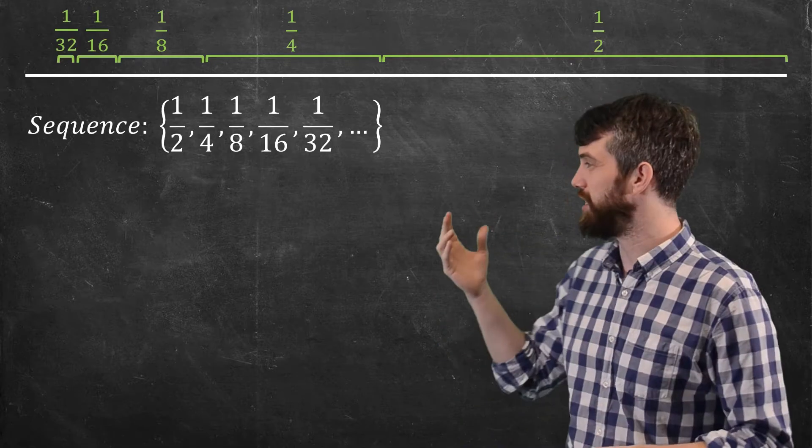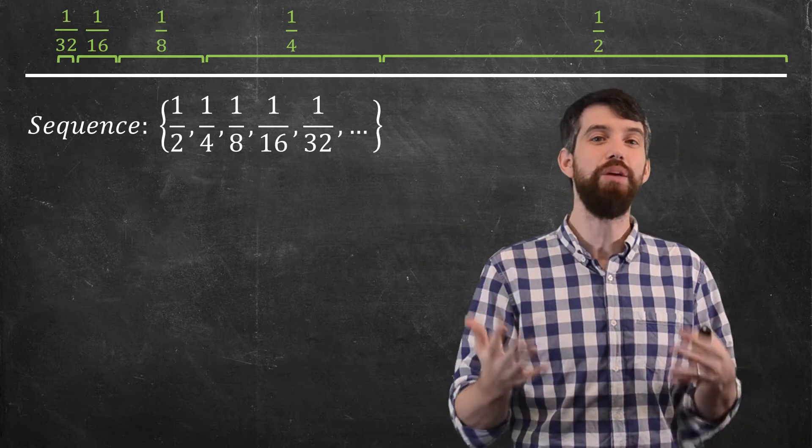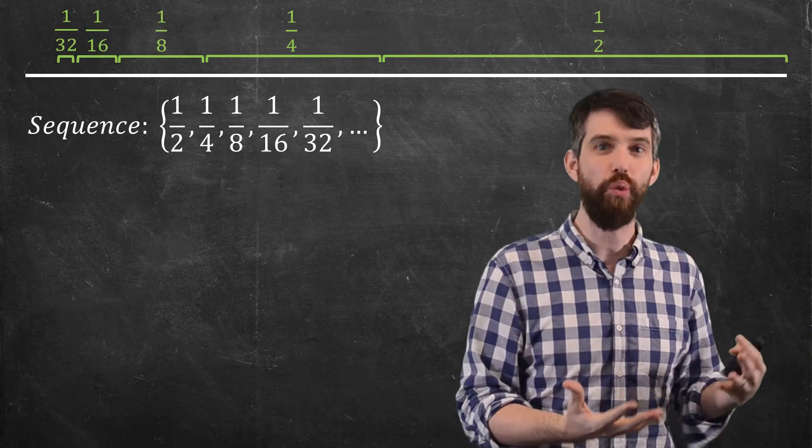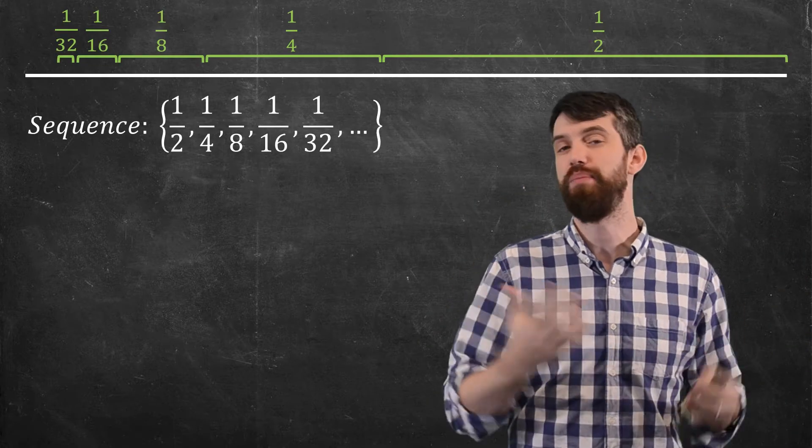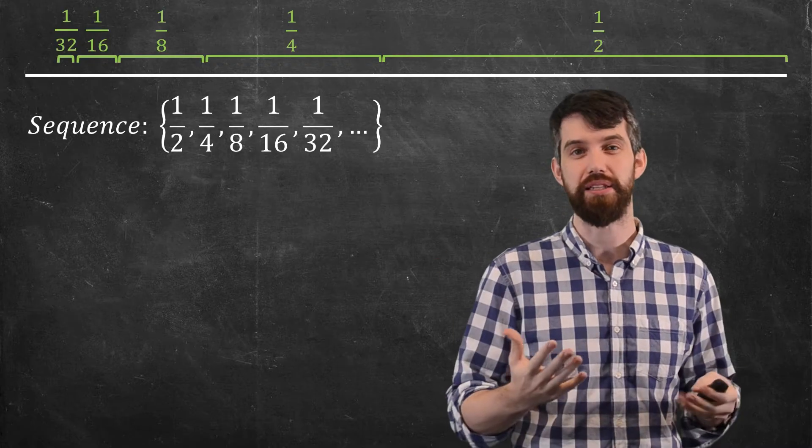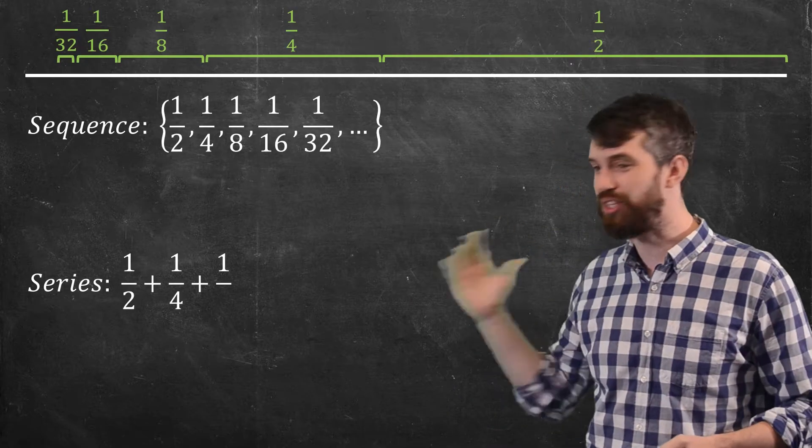But I'm not really interested in just this sequence, just this list of numbers. I'm, in a sense, interested in adding them all up. Does the one-half plus the one-quarter plus the one-eighth, does all of that add up to some particular number? Perhaps one, the full length of this particular distance? Well, that is something not called a sequence, but called a series.